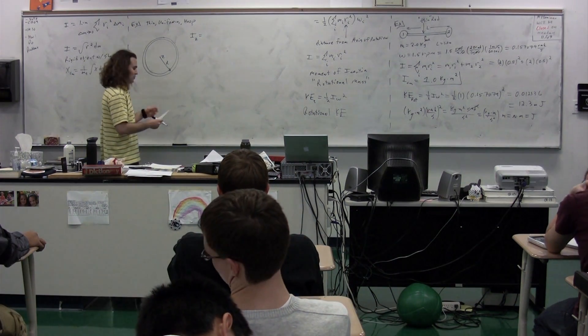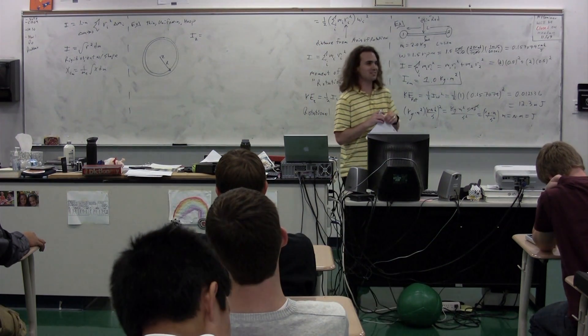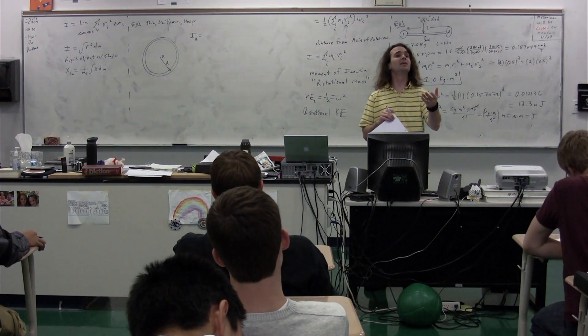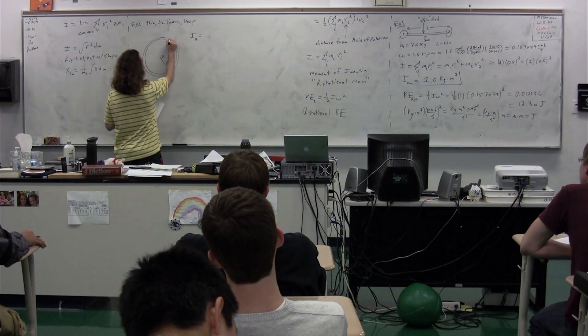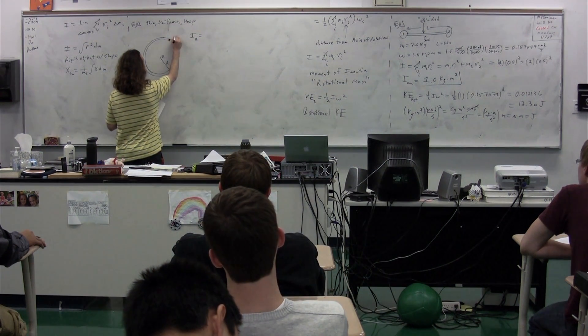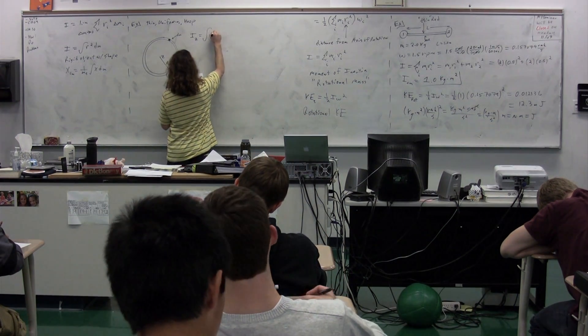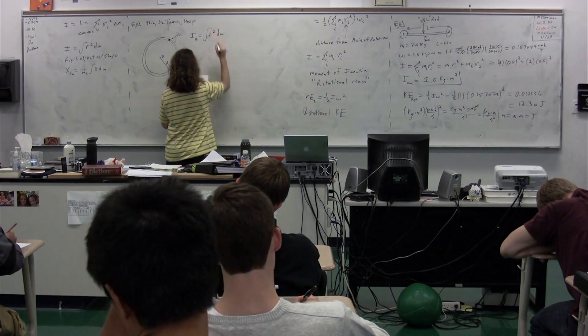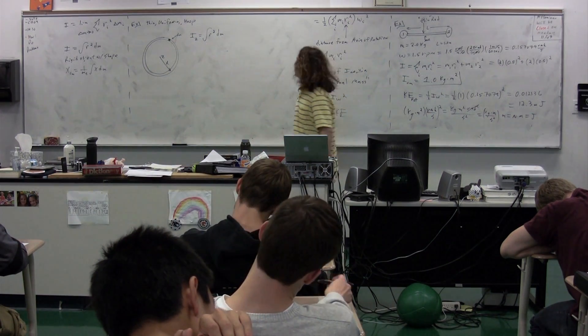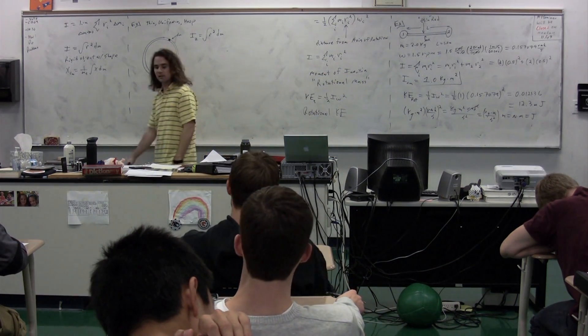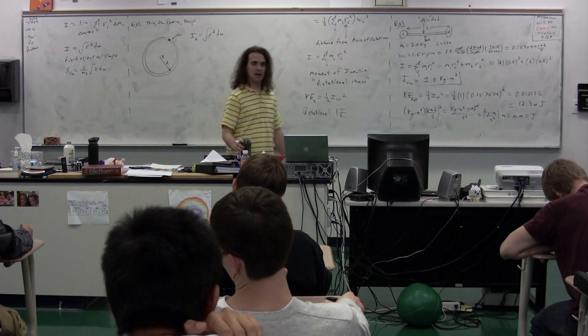We're going to split this into an infinitesimally large number of infinitesimally small pieces, which all have a mass of dm. So we're going to have a whole bunch of these little guys, which have a mass dm. The integral is going to be r squared dm.